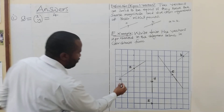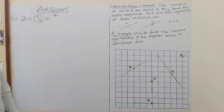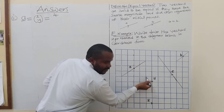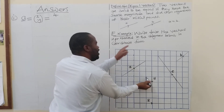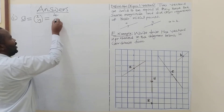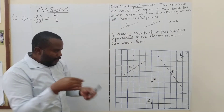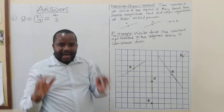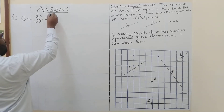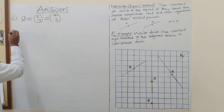Then from that x-position you move upward along the y-axis to meet the terminal point: one, two, three — so y is three, positive because you're going upwards. If you were going downward it would be negative. So vector 'a' equals (4, 3).